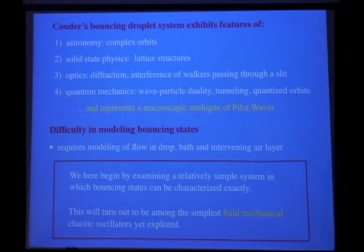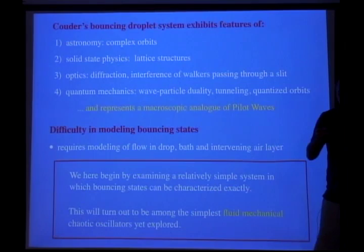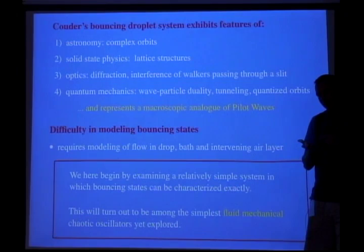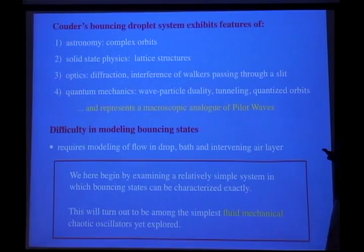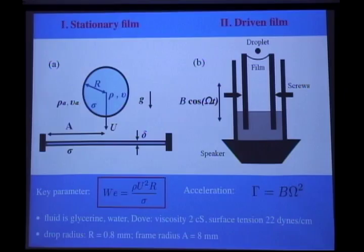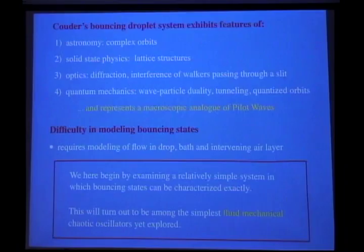To leading order, we'll see that you can think of a drop hitting a free surface like a linear spring. We'll see this through looking at a drop bouncing on a soap film. First we look at a drop hitting a stationary film and get a criterion for breakthrough. Then we look at a drop bouncing on a vibrating film, where we'll see steady bouncing states, period doubling transitions, and the onset of chaos. This is really a classic chaotic oscillator, and all the mathematics one develops in dynamical systems can be applied. I think it's one of the simplest fluid mechanical chaotic oscillators.